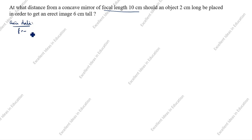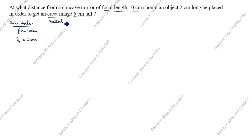So focal length f = minus 10 centimeter for the concave mirror. The object is 2 centimeter long, so height of object ho = 2 centimeter — height of object is always positive for lens and mirror. The image is erect, meaning virtual and erect. Virtual means positive, so height of image hi = 6 centimeter. If it were real, it would be minus 6 centimeter.